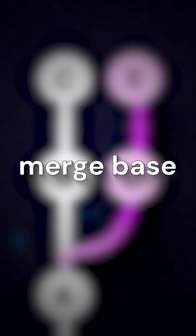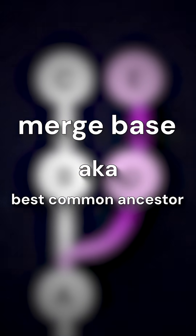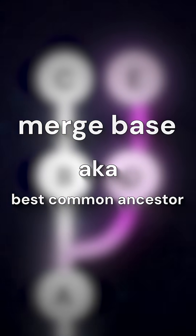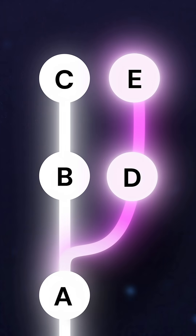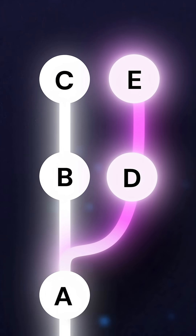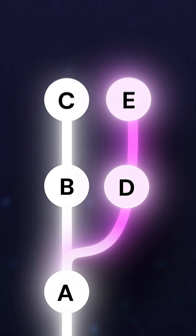It's the only commit with two parents. The process for a merge commit looks like this. First, we need to find the merge base. The merge base, also called the best common ancestor, is the nearest ancestor that is in common to both branches. In this case, that would be A.